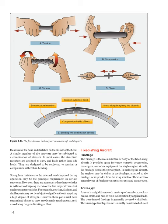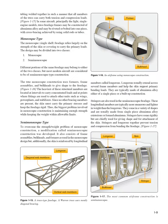Fixed-wing aircraft fuselage: the fuselage is the main structure or body of the fixed-wing aircraft. It provides space for cargo, controls, accessories, passengers, and other equipment. In single-engine aircraft, the fuselage houses the power plant. In multi-engine aircraft, the engines may be in the fuselage, attached to the fuselage, or suspended from the wing structure. There are two general types of fuselage construction: truss and monocoque. A truss is a rigid framework made up of members such as beams, struts, and bars to resist deformation by applied loads. The truss frame fuselage is generally covered with fabric. The truss-type fuselage frame is usually constructed of steel tubing welded together so that all members of the truss can carry both tension and compression loads.